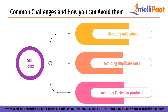Finally, avoiding Cartesian products. A Cartesian product occurs when you forget to specify the join condition, causing every row in one table to be matched with every row in another table. This can cause performance problems and generate a very large result set. To avoid this, be sure to specify the join condition in the ON clause.